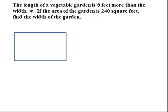The following problem is an application of quadratic equations, and it states the length of a vegetable garden is 8 feet more than the width w. If the area of the garden is 240 square feet, find the width of the garden.